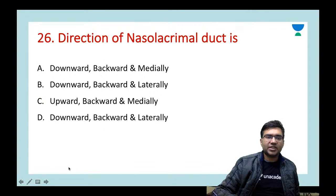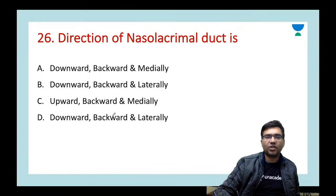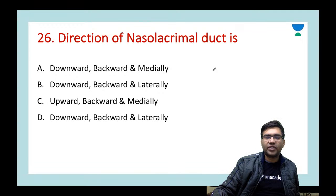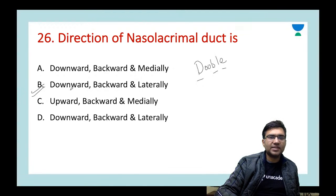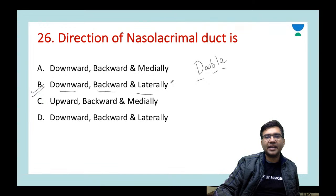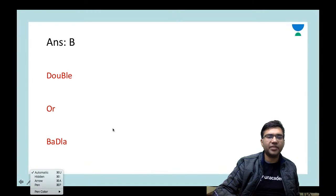Next question: what is the direction of the nasolacrimal duct? Remember the mnemonic DBL: the nasolacrimal duct runs Downwards, Backwards, and Laterally. This was also a previous year PGI question.